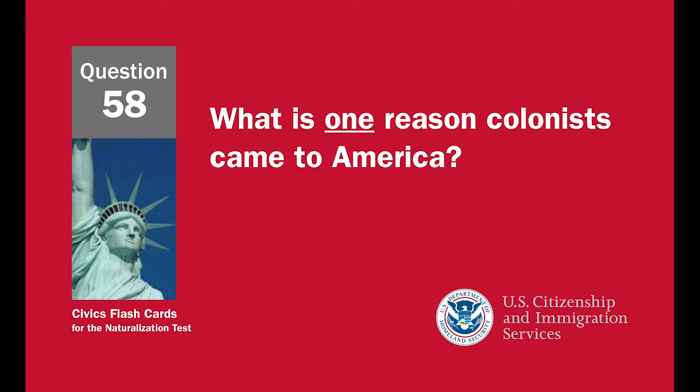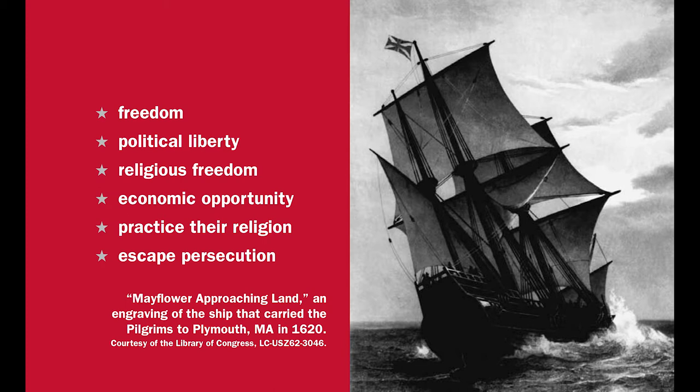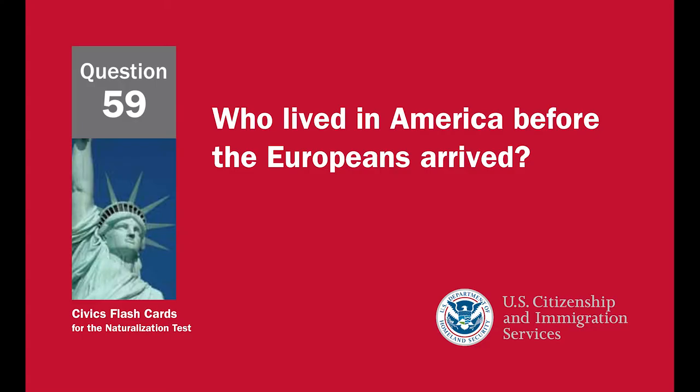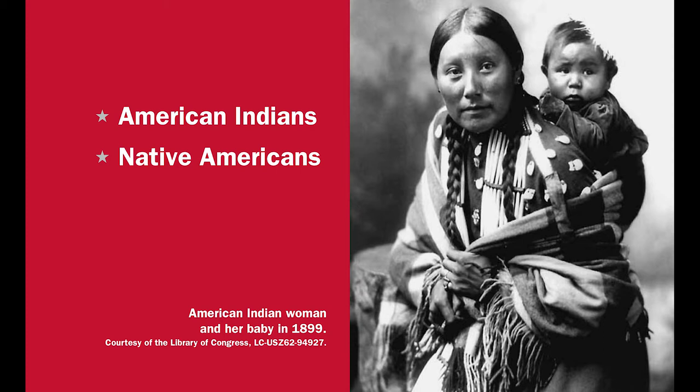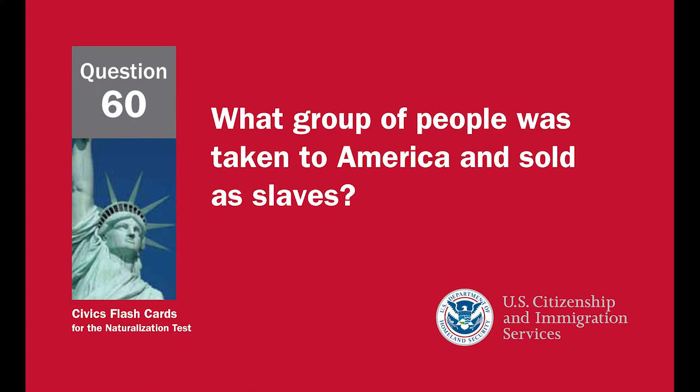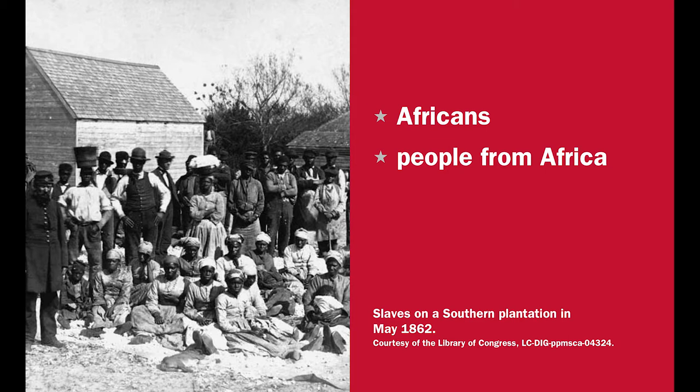What is one reason colonists came to America? Freedom, political liberty, religious freedom, economic opportunity — to practice their religion, to escape persecution. Who lived in America before the Europeans arrived? American Indians, Native Americans. What group of people was taken to America and sold as slaves? Africans, people from Africa.